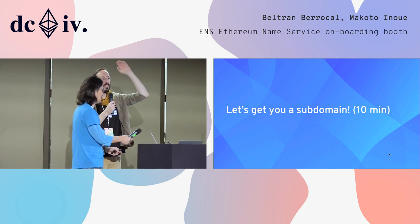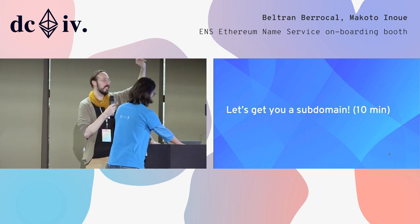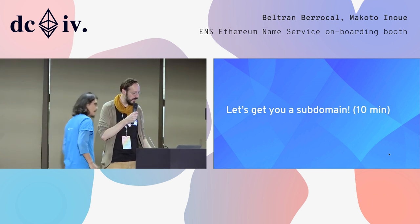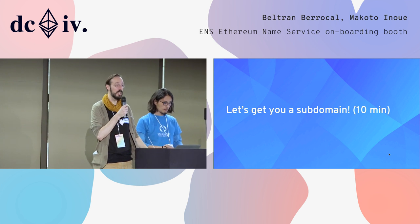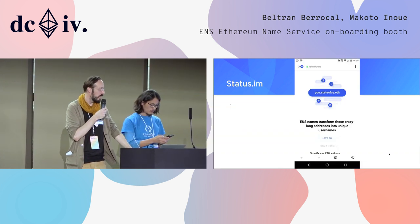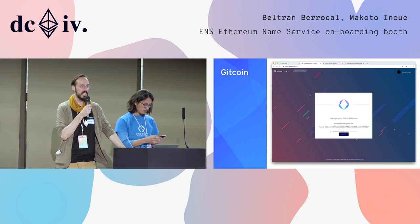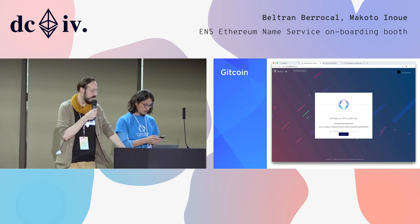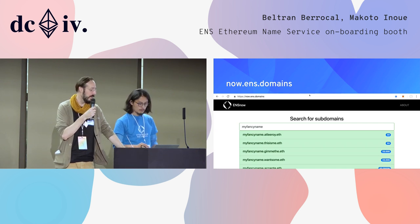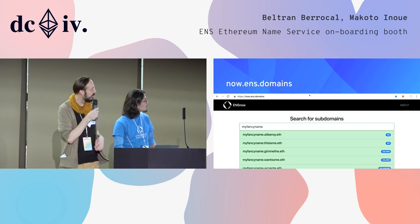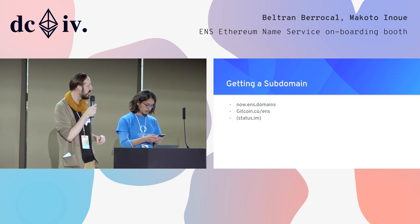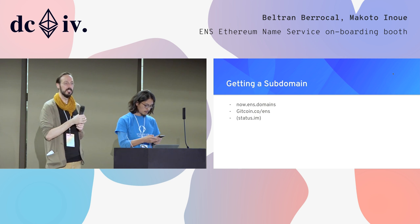To remind people, the three versions you can try now to get a subdomain: either with Status — download Status — or with Gitcoin, if you have a GitHub account, or you can go to now.ens.domains and look for a domain there, if you have MetaMask or a wallet with Ether.